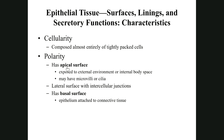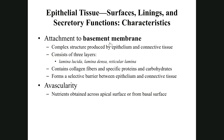Epithelial cells have two different sides — this is called polarity. The apical surface is the top, exposed surface. The basal surface is the bottom of the epithelium, where it connects to underlying connective tissue. This connection between epithelial tissue and connective tissue at the basal surface is called the basement membrane.